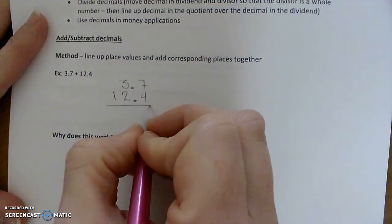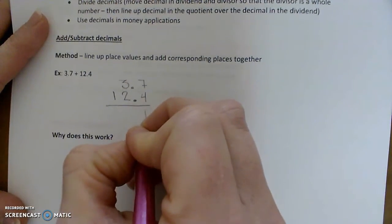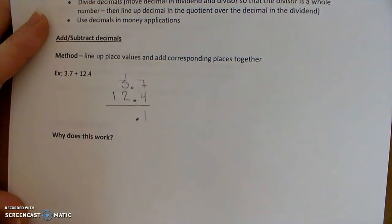And then we would add, like normal, regrouping when necessary, so 7 plus 4 is 11. Put down the 1, carry the 1, and then we drop the decimal point down in the same location.